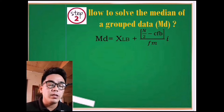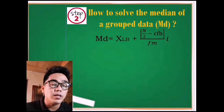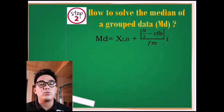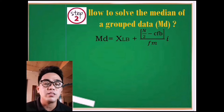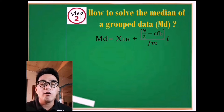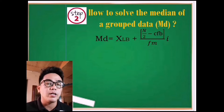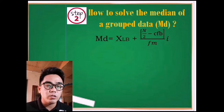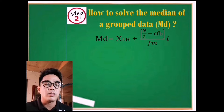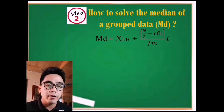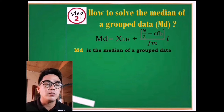We can only solve the median of grouped data with a given formula. As you can see, we have: Md equals XLB plus (n over 2 minus CFB) over FM times i. Now let us try to determine each symbol being used in the given formula. MD is the median of grouped data.